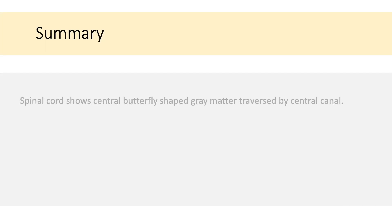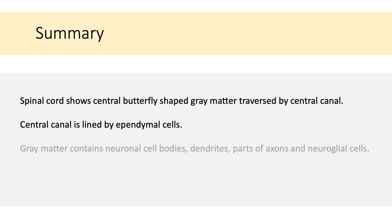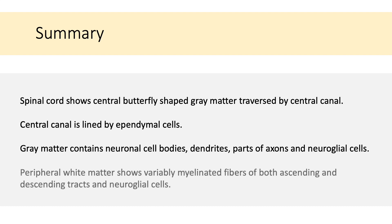Quickly recalling what we have seen so far: spinal cord shows central butterfly-shaped grey matter traversed by central canal. Central canal is lined by ependymal cells. Grey matter contains neuronal cell bodies, dendrites, parts of the axons, and neuroglial cells. Peripheral white matter shows variably myelinated fibers of both ascending and descending tracts and neuroglial cells.